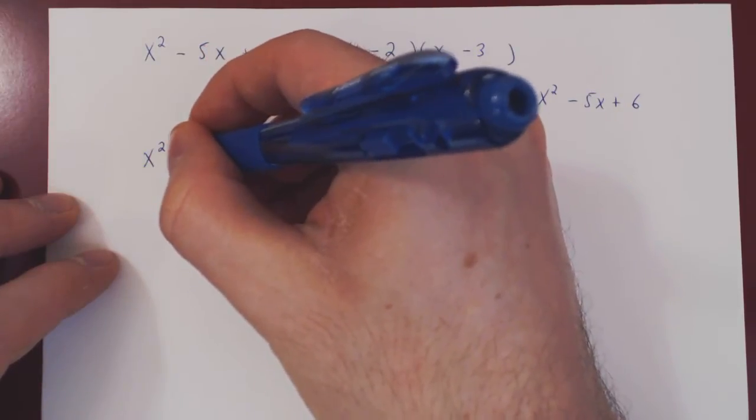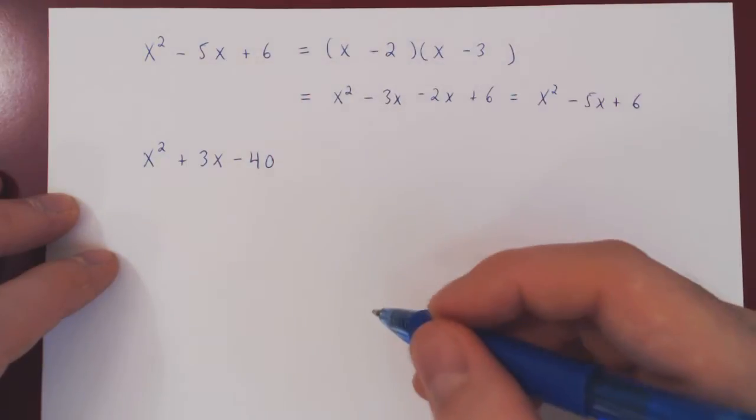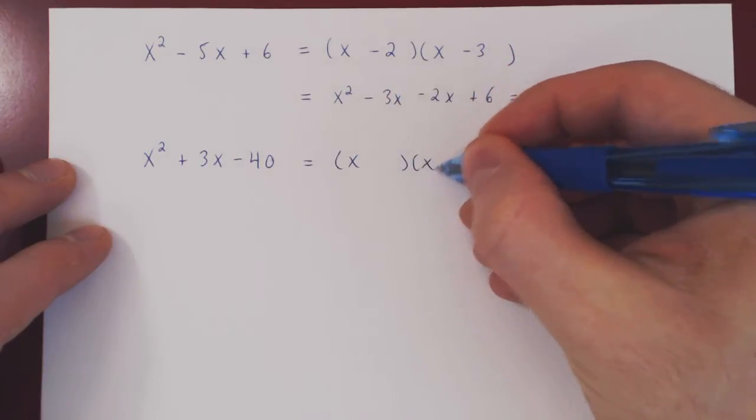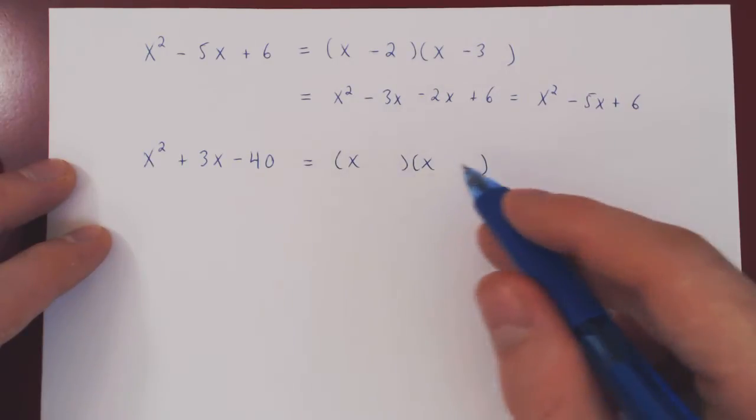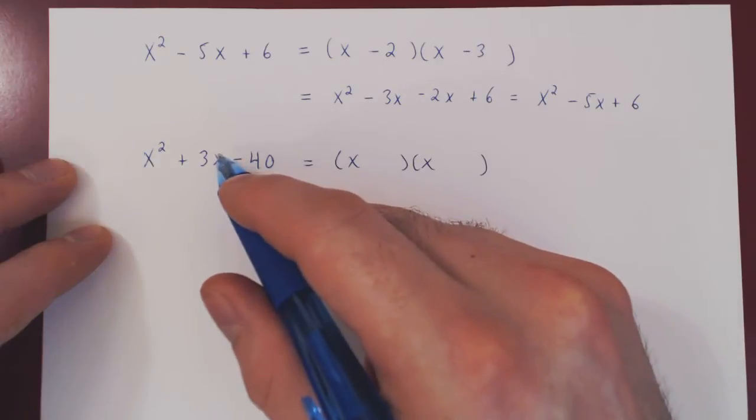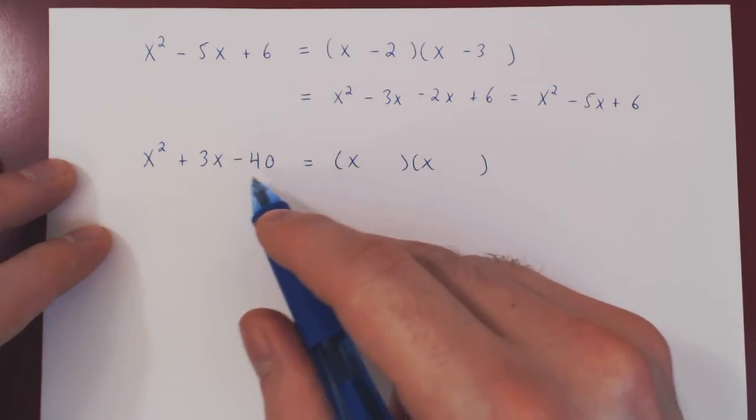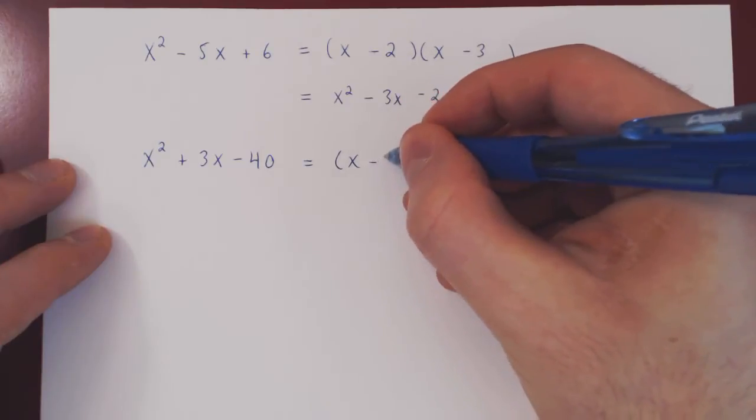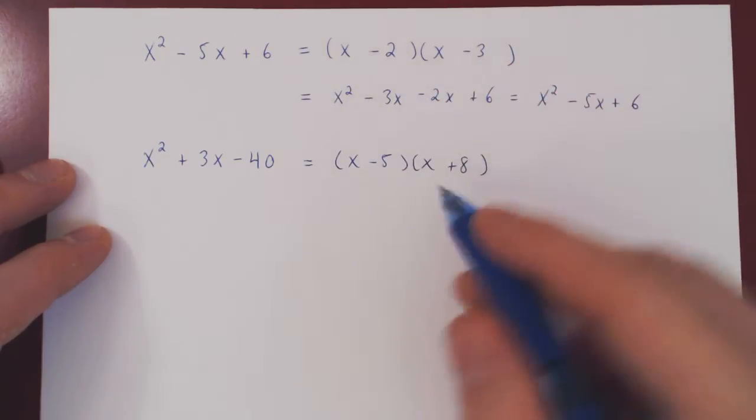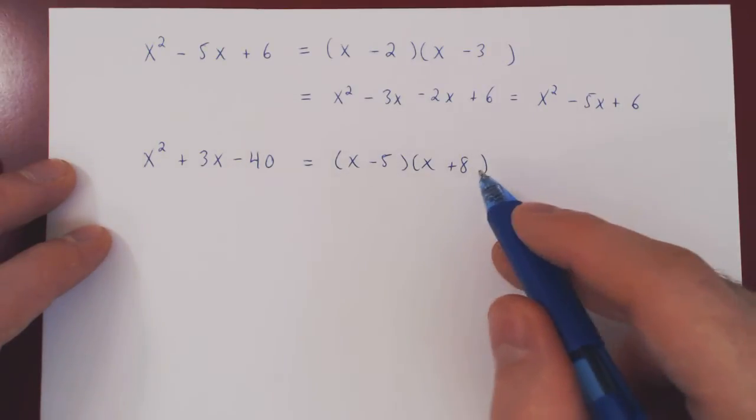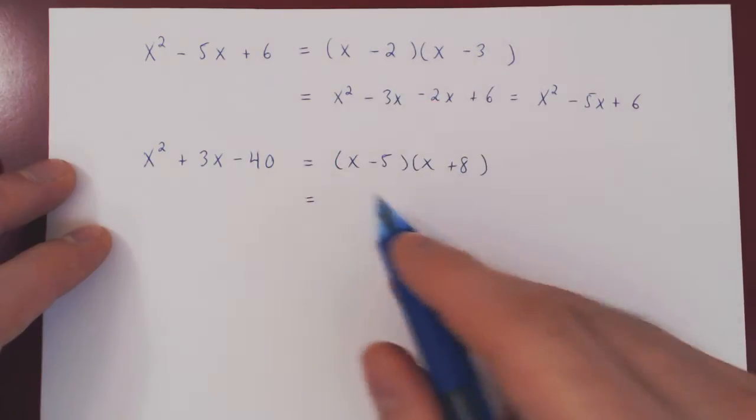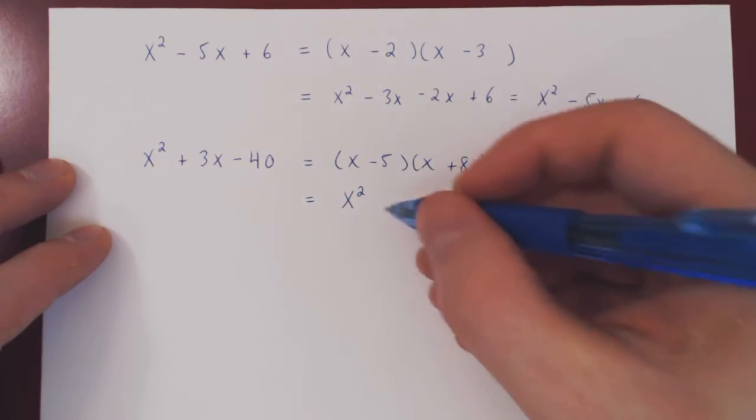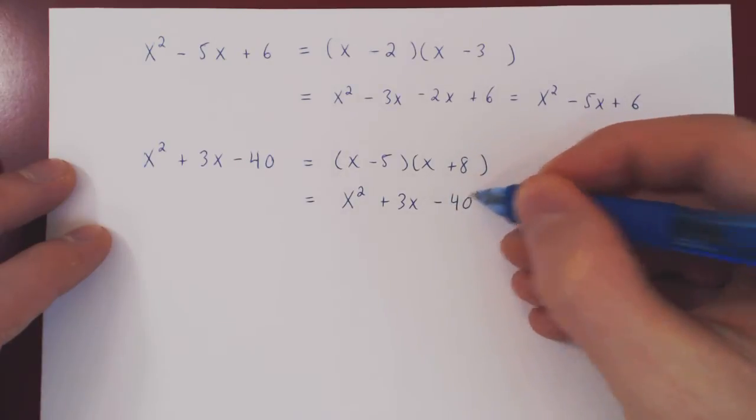Let's look at another example, x² + 3x - 40. Same thing, we'll try and factor by inspection. If this does factor, there will be two factors, as it is a quadratic. Now we need two real numbers whose product is negative 40 and whose sum is positive 3. Well, you can think of 40 being 5 times 8, and 8 minus 5 is 3, so this would be (x - 5)(x + 8). And we can check once again by multiplying out, we'll get x² plus 8x minus 5x gives us plus 3x, minus 5 times 8 is minus 40. Check.